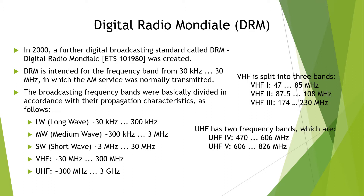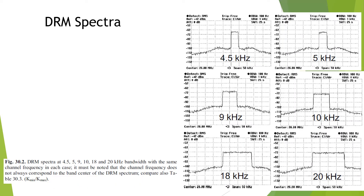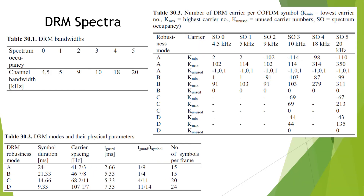DRM is the attempt to replace more and more unused frequency bands, in which amplitude modulation has hitherto been used, with modern digital transmission methods. The modulation method applied is COFDM using MPEG-4 AAC for compressing audio signals. The net data rates are usually approximately 10 to 20 kilobits per second. The channel bandwidths specified for DRM are between 4.5 kilohertz and 20 kilohertz, derived from the bandwidths normally used in those frequency bands.